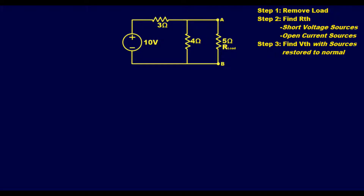For this first example we're going to start off with a very simple one. This circuit has only one voltage source and three resistors. Two of the resistors will be part of the circuit and the third resistor will be our load resistance — the 5 ohm resistor — between points A and B.